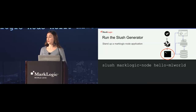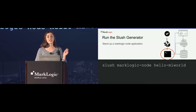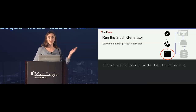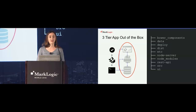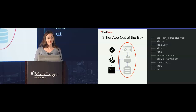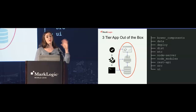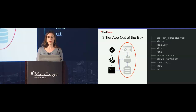Here's the most important step: invoking the Slush generator with the Slush command, which stands up your own project scaffolding from database to front end. My app is called HelloMLWorld here. By running that command, you get some defaults and options to configure your own ports, and you get this full three-tiered application out of the box, along with the folder structure on the right showing all the plumbing and work done to get these components installed and working together.